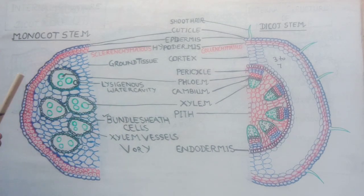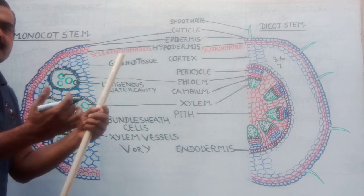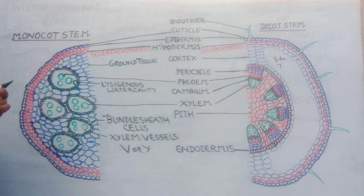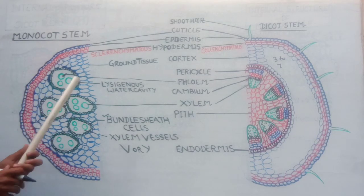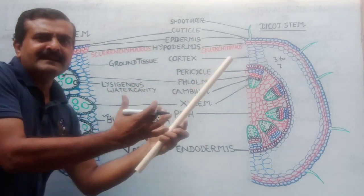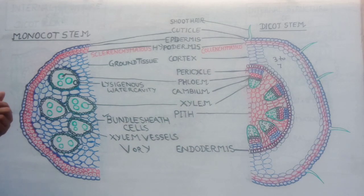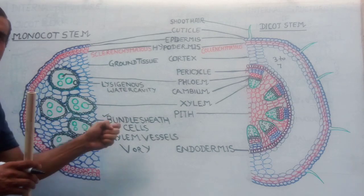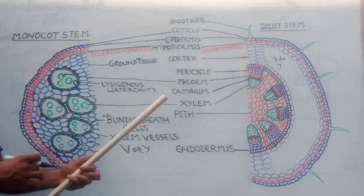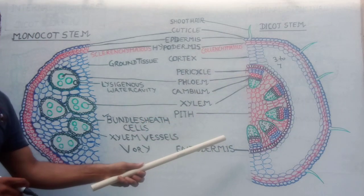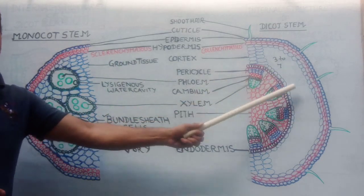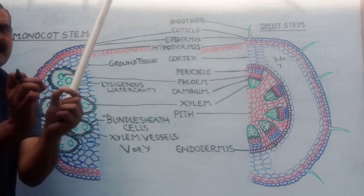In case of monocot, the vascular bundles are surrounded by bundle sheath cells — bundle sheath cells are present in monocot but absent in dicot. Regarding phloem parenchyma: phloem parenchyma is absent in monocot but present in dicot. This is a main question for NEET. Bundle sheath cells around vascular bundles are present in monocot but not in dicot, whereas phloem parenchyma is present in monocot — wait, phloem parenchyma is absent in monocot and present in dicot.